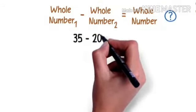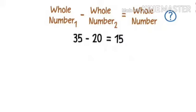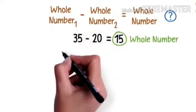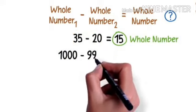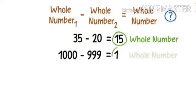35 minus 20 is equal to 15. We subtracted two whole numbers and we got whole number again. Similarly, 1000 minus 999 will give us 1, a whole number again.